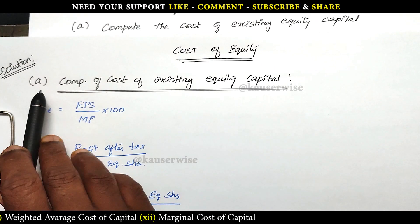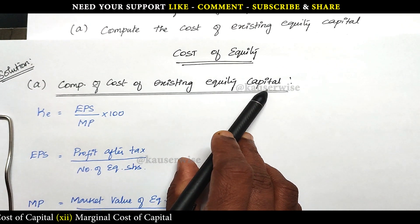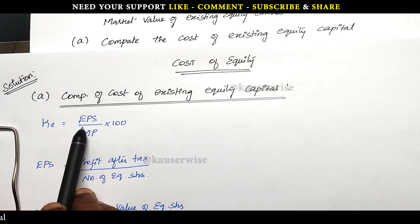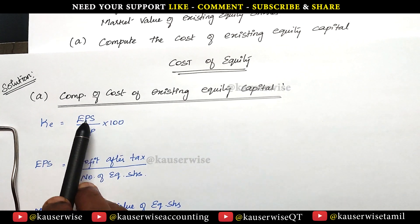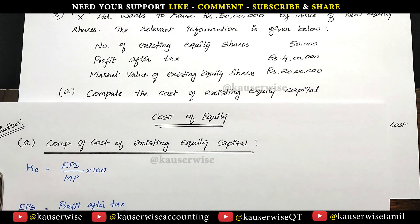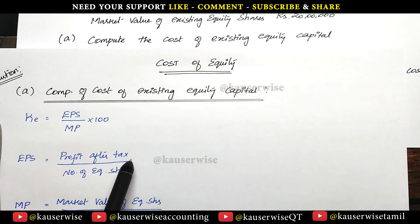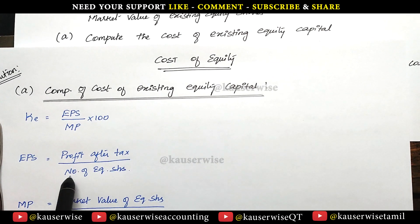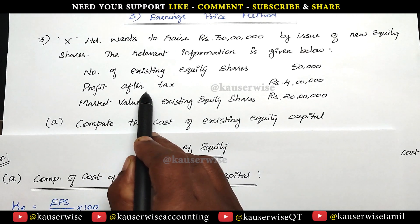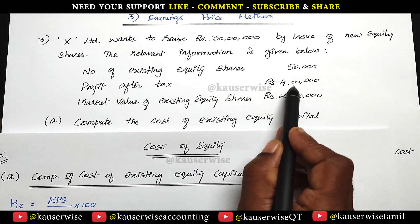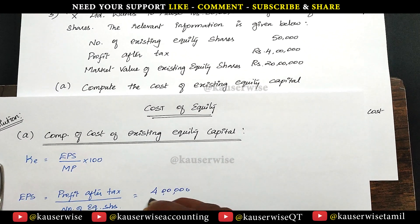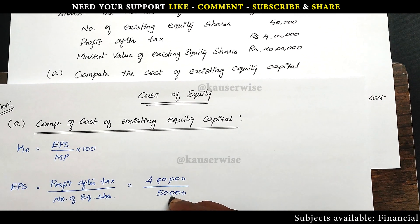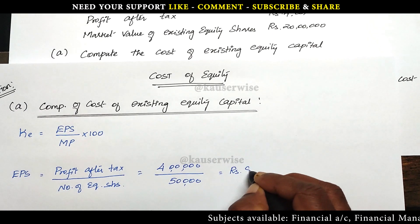Now let's see the solution. First, computation of cost of existing equity capital. The formula for existing equity capital is: KE = EPS (earnings per share) divided by MP (market price per share), into 100. We need to calculate two components. First, earnings per share — the formula is profit available to equity shareholders, that is profit after tax, divided by number of equity shares. Profit after tax is 4 lakhs divided by 50,000 shares, giving us 8 rupees. So earnings per share is 8 rupees.